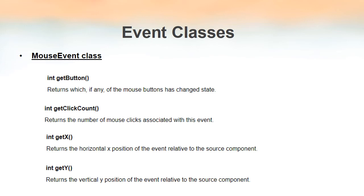Some of the methods inside the MouseEvent class are getButton, getClickCount, getX, and getY — all of which return an integer. getButton returns the number of the button that is pressed, whether it is button 1, 2, or 3. getClickCount returns the number of clicks that occurred. getX returns the x-coordinate on the frame at which the mouse click occurred, and getY returns the vertical y-position. If you want the x-coordinate use getX; for the y-coordinate use getY.